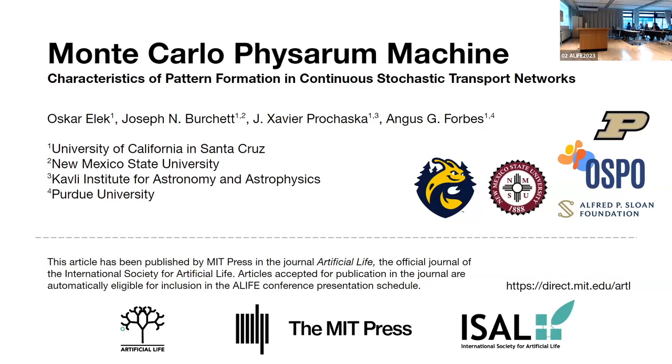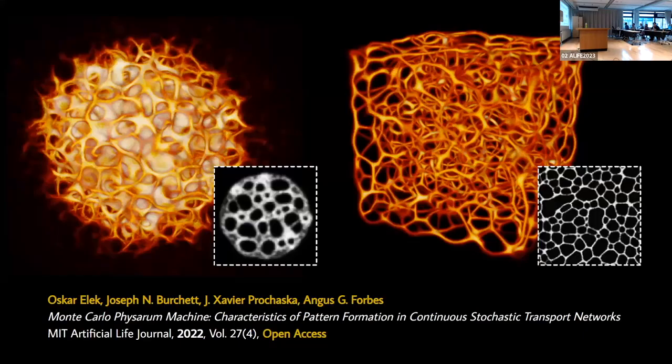What I'm going to be talking about is 3D slime mold — our work on extending slime mold simulations to three dimensions using a probabilistic approach to build something we call the continuous transport network. You can see that here. Those black and white insets are basically the work we've been starting from, and that's the full reference to the paper in Artificial Life.